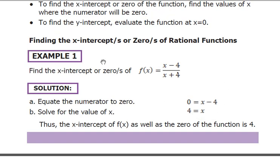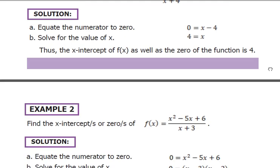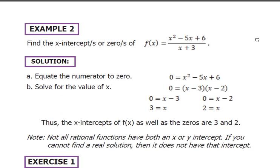Finding the x-intercepts or zeros of the function — Example 1. By inspection alone, f(x) equals (x minus 4) all over (x plus 4). Just set the numerator equal to 0 and solve for x. So x minus 4 equals 0, then x equals 4. That is the x-intercept or the zero of the function.